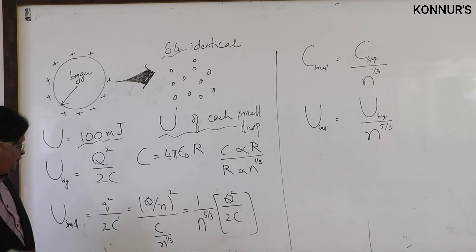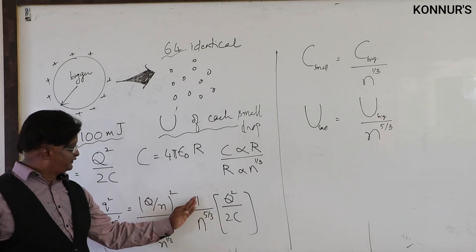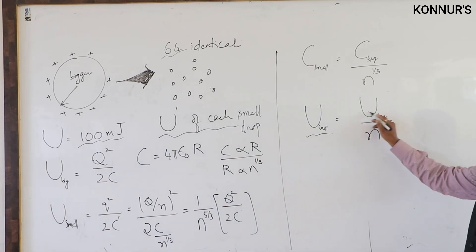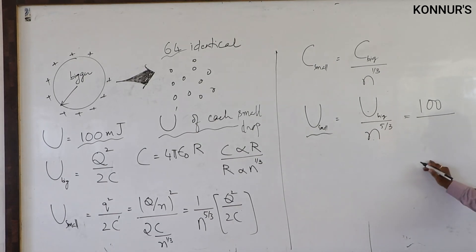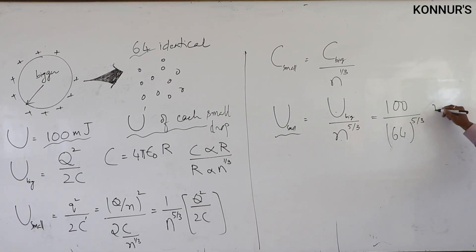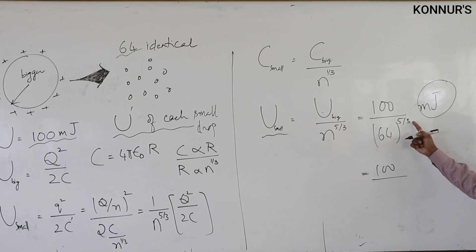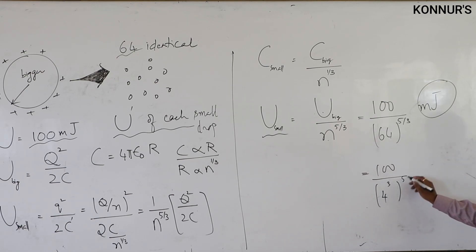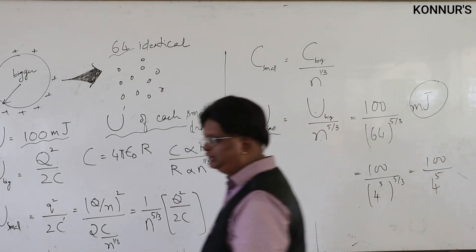Therefore U_small = U_big / N^(5/3). Here N = 64 = 4³, so N^(5/3) = 4^5. U_small = 100 millijoules / 4^5. Please carry out this simplification. Be careful to retain the correct units of millijoules in the final answer.